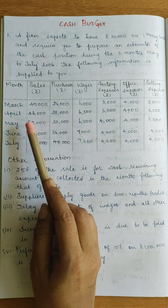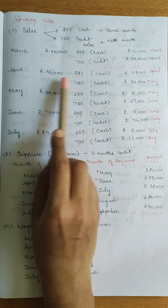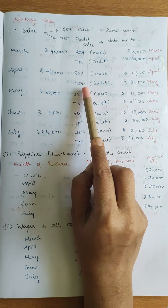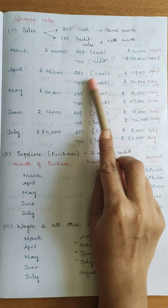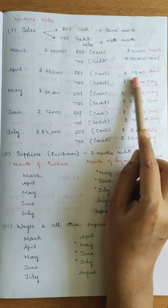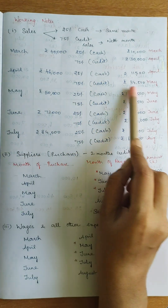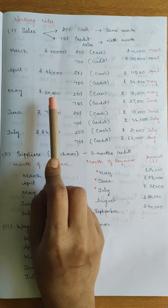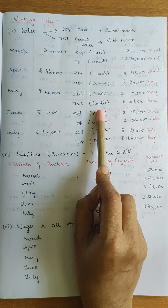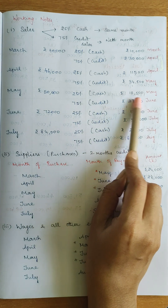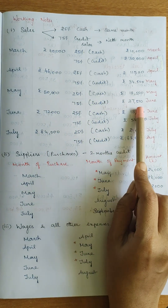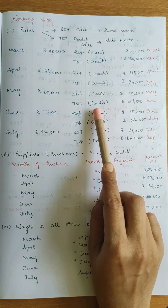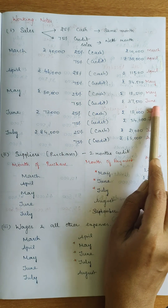May sales are 50,000 rupees. Of 50,000, 25% cash is 12,500 rupees; 75% credit is 37,500 rupees. So 12,500 is realized in May, and 37,500 is realized in June. June sales are 72,000. Of 72,000, 25% cash is 18,000 rupees; 75% credit is 54,000 rupees. So 18,000 is realized in June, and 54,000 is collected in July.